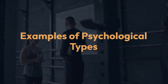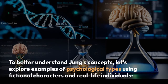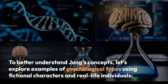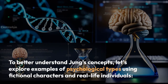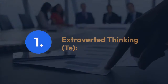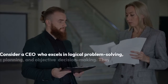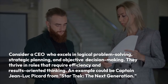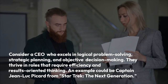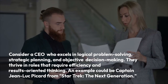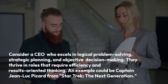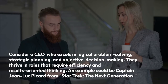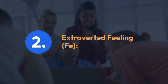To better understand Jung's concepts, let's explore examples of psychological types using fictional characters and real-life individuals. First, extroverted thinking: consider a CEO who excels in logical problem-solving, strategic planning, and objective decision-making. They thrive in roles that require efficiency and results-oriented thinking. An example could be Captain Jean-Luc Picard from Star Trek: The Next Generation.